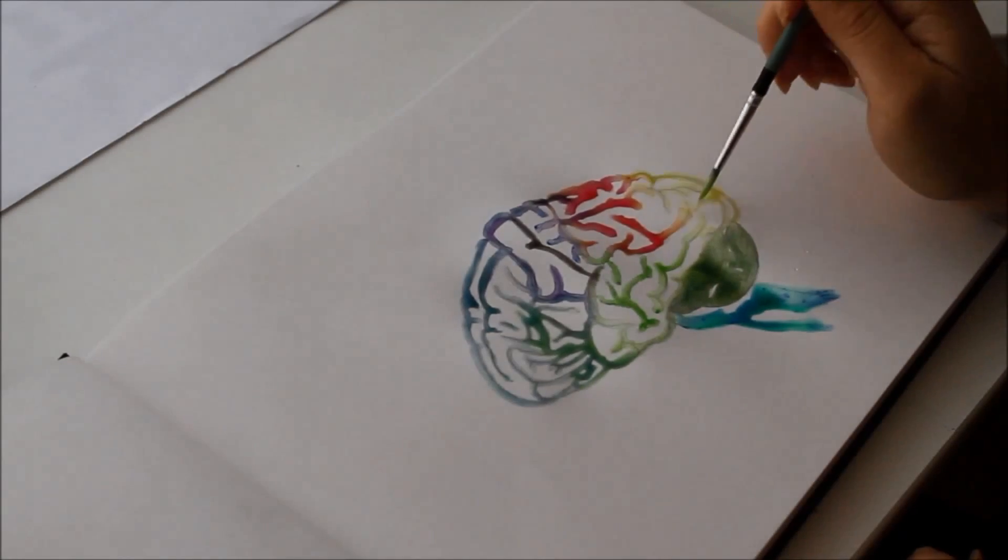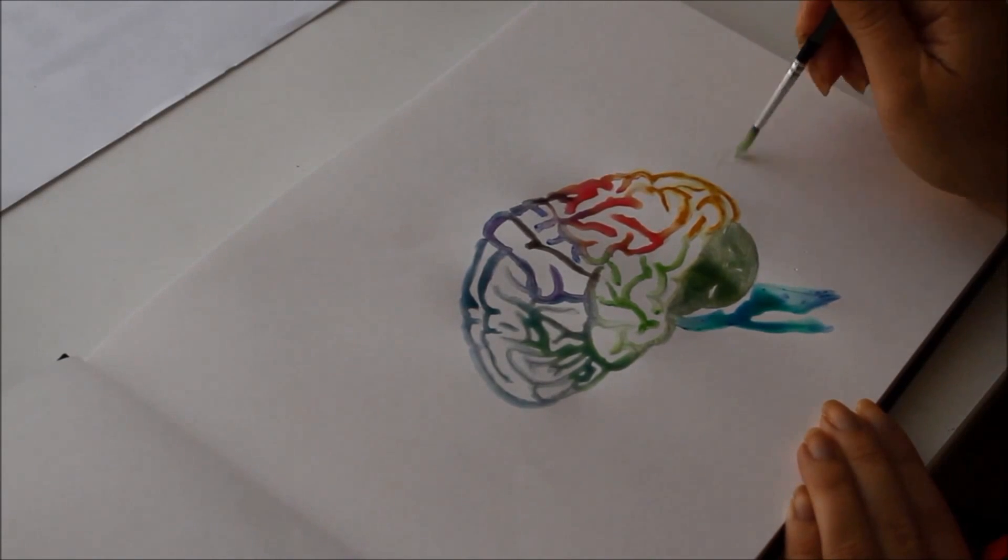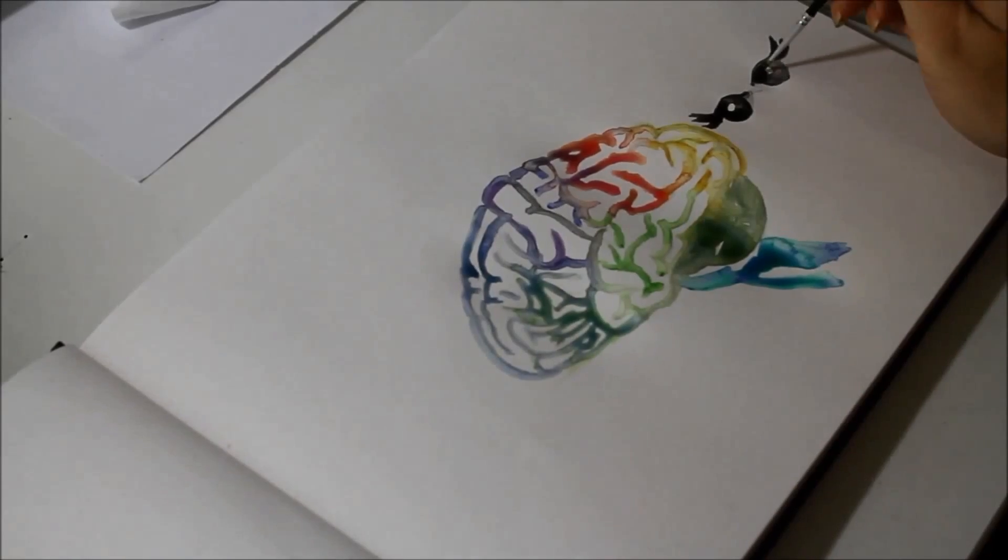So let's start off with the occipital lobe. Although we think that our eyes are the sight organs, actually our brain does all the seeing.